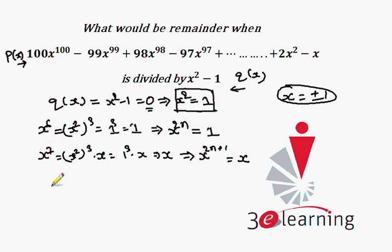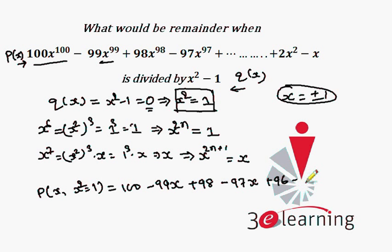We put this value in. What we will get is P(x) when x squared is equal to 1. For 100, this is an even power, so we get 100. For the odd power, we get minus 99x. For the even power, 98. For the odd power, 97x. For the even power, 96. And the last two terms would be 2, because it's an even power so replaced by 1, and minus x because it's an odd power.